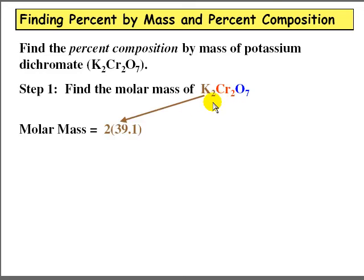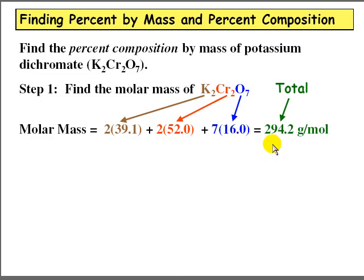So we start out by taking two potassiums, because of the two here, the atomic mass of potassium is 39.1. Then we add two chromiums, which are 52 each, and seven oxygens, which are 16 each. This adds up to a total molar mass of 294.2.